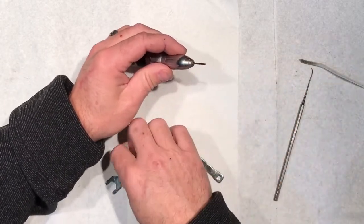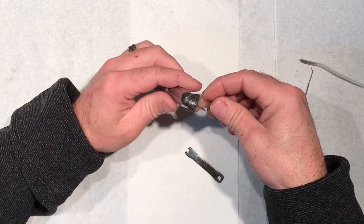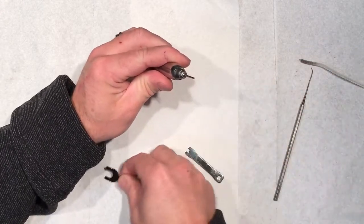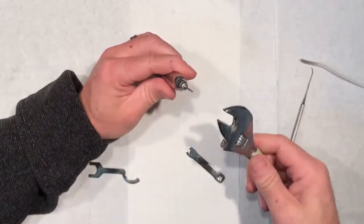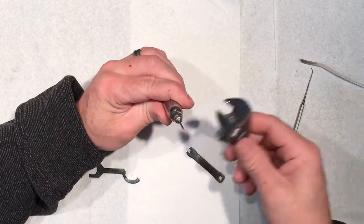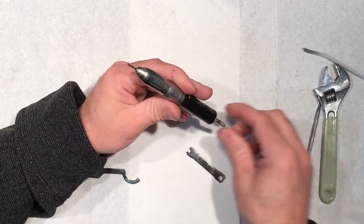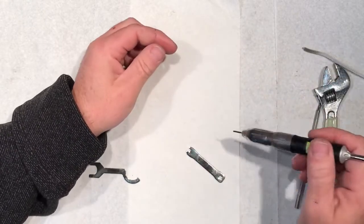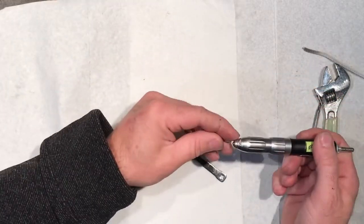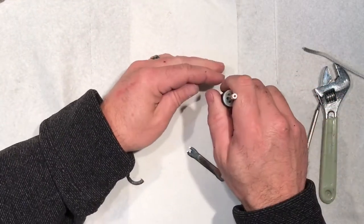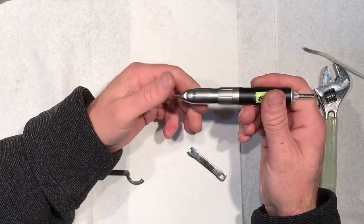Grab our other wrench that came with the tool. You can also use a small adjustable wrench like I use a lot of times, and just snug it up. That should be it. Next thing we're going to do is just make sure our burr goes in all the way until we hear it click, and we're ready to go.